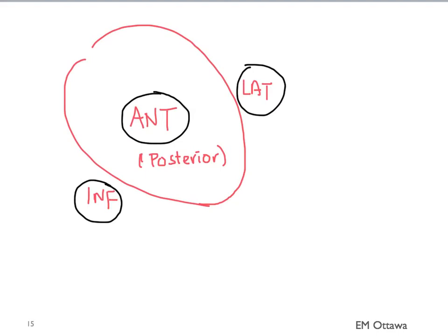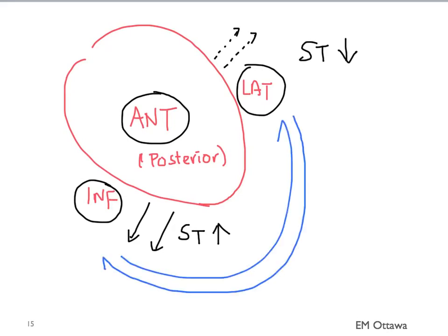The rules of reciprocality in ST elevation mean that if there is an ST elevation MI in one territory of the heart, the opposite territory should show ST depression, picking up the mirror changes. Therefore, in a patient with ST elevation in the inferior leads, the lateral leads should be showing ST depression. And if there are ST elevations in the lateral leads, there should be ST depression in the inferior leads. These two territories always reciprocate with each other. The same also goes for anterior and posterior leads: if there is ST elevation in the anterior leads and we do posterior leads, we will see ST depression.